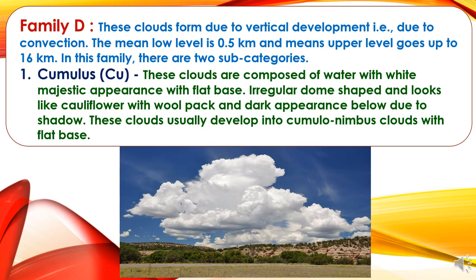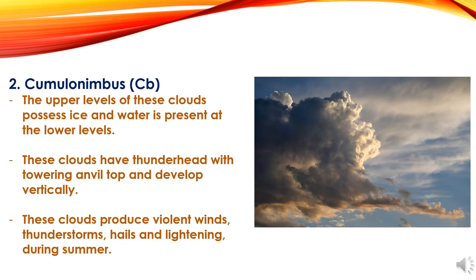Now we will study about Family D. These clouds form due to vertical development — convection. The mean low level is 0.5 km and mean upper level goes up to 16 km. There are two sub-categories. First is Cumulus Clouds: composed of water with a white majestic appearance, flat base, irregular dome-shaped top that looks like a cauliflower with a wool-pack appearance and dark base due to shadow. These clouds usually develop into Cumulonimbus clouds. Second is Cumulonimbus Clouds: upper levels possess ice and water is present at the lower levels. These clouds have a thunderhead with towering build-up and develop vertically. They produce violent winds, thunderstorms, hail, and lightning during summer.